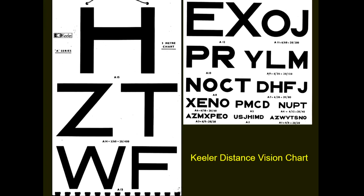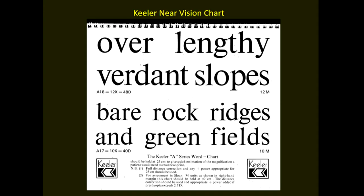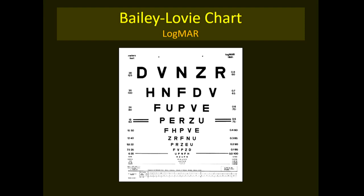The Keeler distance vision chart has large optotypes designed for testing at a 3-meter distance. The near vision chart has a predictive value indicating required magnification — for example, if a patient reads a certain line, 12x magnification would be required. The Bailey-Lovie Logmar chart was specifically developed for low vision clients and later adapted by ETDRS. There are also near vision charts based on Logmar acuity.